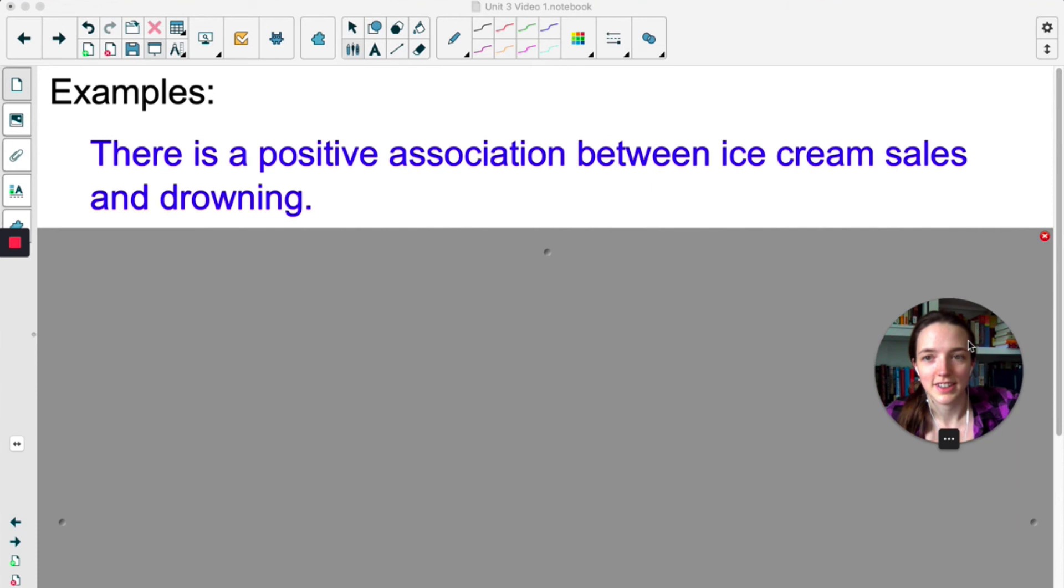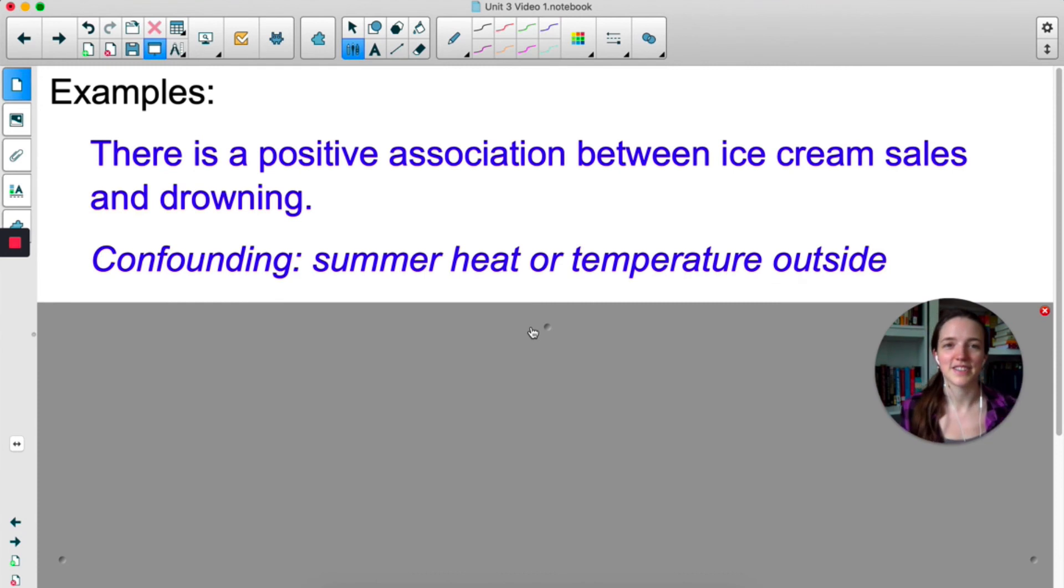Here's a classic example. There's a positive association between ice cream sales and drowning. When ice cream sales go up, the number of drownings also goes up. Well, the confounding issue here is the heat or the temperature outside. When it's hotter outside, people are going to buy more ice cream. And when it's hotter outside, people are going to drown more often because they are swimming more often.